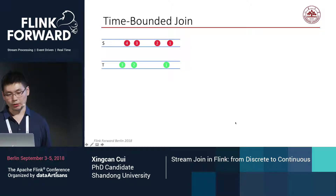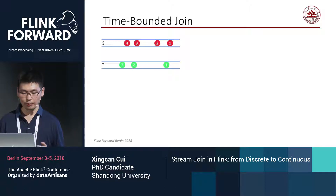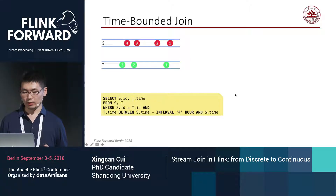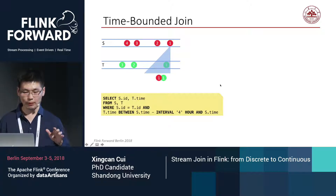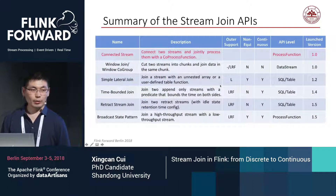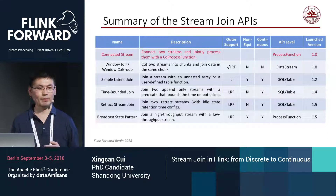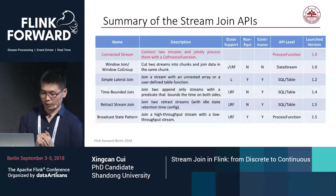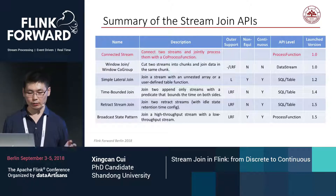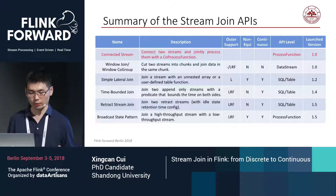The last join type I'd like to introduce is the time-bounded join. As mentioned, it is applied on append streams, and to activate it, the join predicate must contain a conjunction of an equi join predicate and a time bound on both sides. It's just like defining a qualified time span on the opposite stream for each row. Here's a summary of stream join-related APIs supported in Flink — from version 1.0 to 1.5, from windowed joins to continuous time stream-to-stream joins, support for join operations has been greatly enriched.